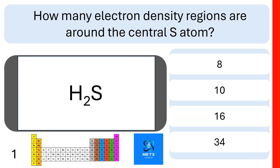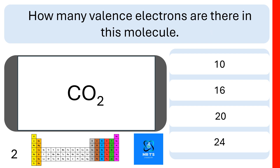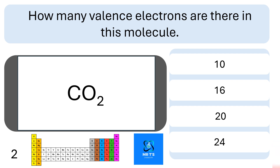First question. How many electron density regions are around the central sulfur atom? Are there 8, 10, 16, or 34? Correct — there are 8. Question 2. How many valence electrons are there in this molecule? Are there 10, 16, 20, or 24? If you put 16, you were correct.